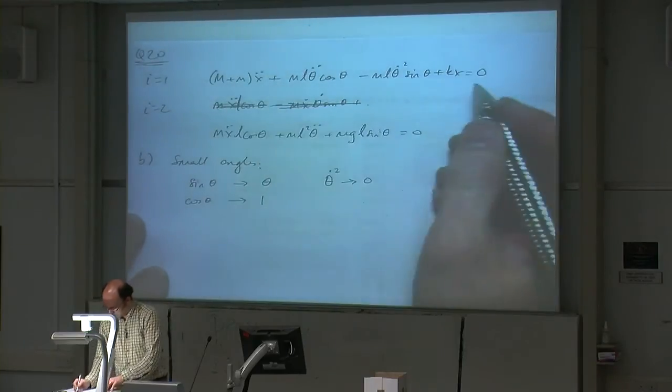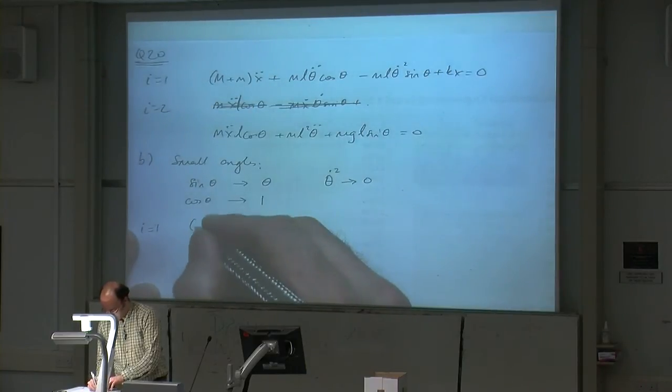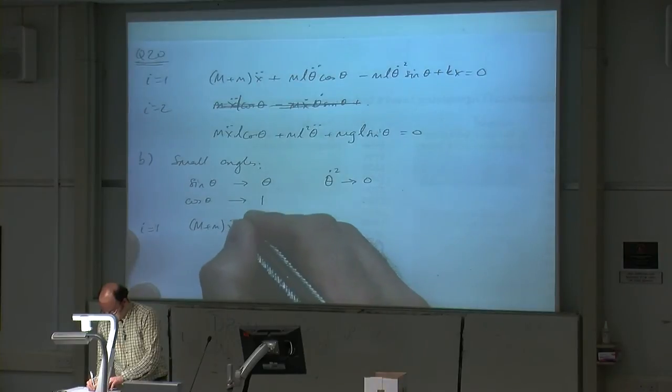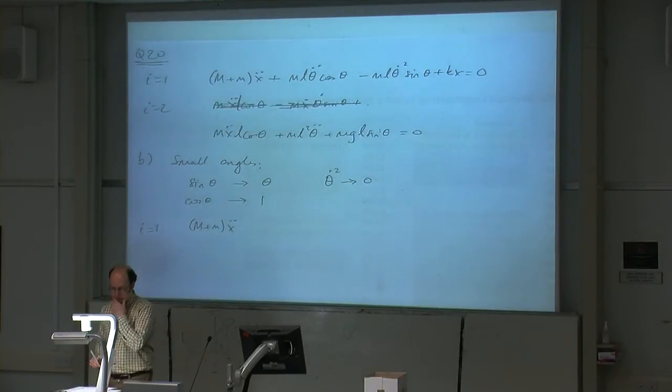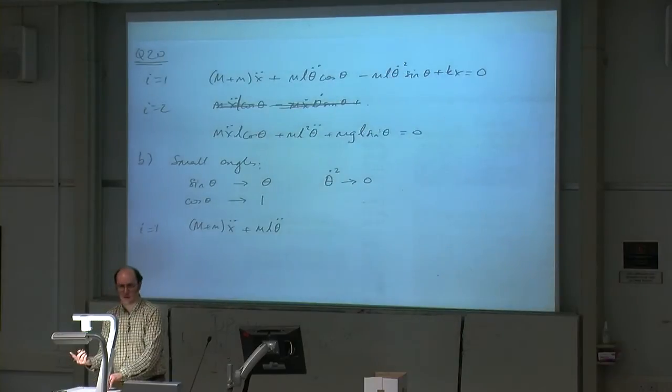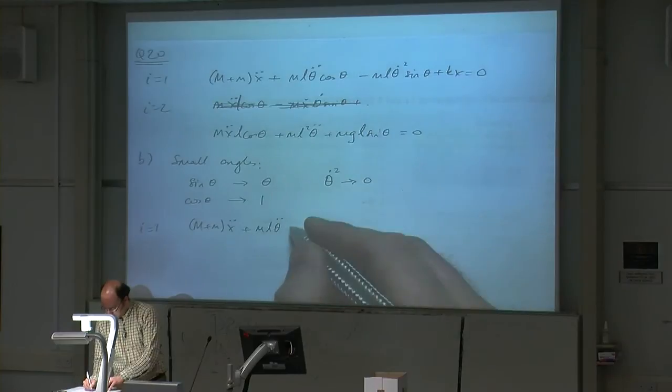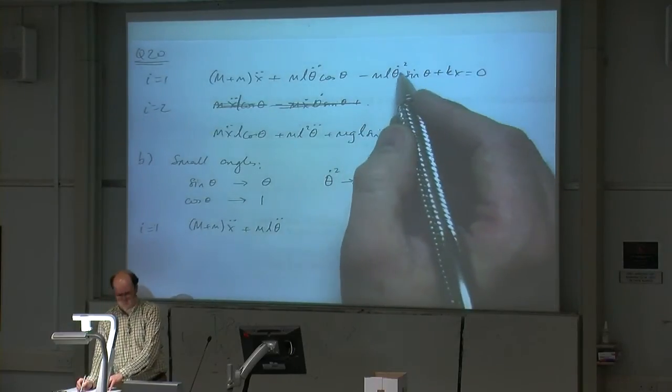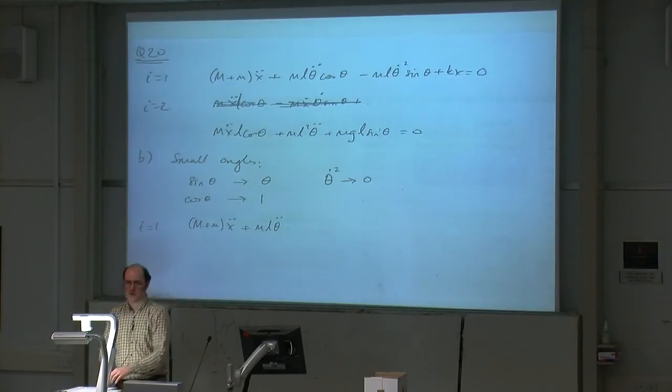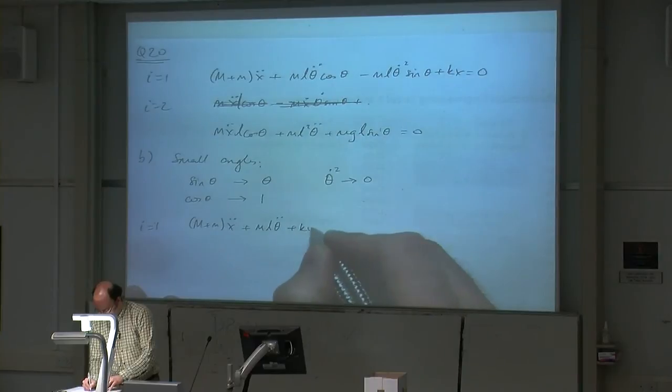Let's apply these assumptions to the first equation, i equals 1. We've got (M+m)Ẍ, that's exactly the same, there's no theta considered. Plus MLθ̈, and here we've got cos(θ), well we know that's equal to 1, so that's just multiplied by 1. We've got this term with θ̇² - let's neglect it, assume that's 0. And then at the end we've got +KX = 0.